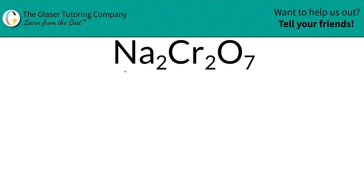So how do we find the percent composition of sodium, chromium, and oxygen in sodium dichromate? Well, the first thing we're going to do is find the total mass, and then we can find those percentages easy peasy. Watch how nice and neat this little table is to help us organize the information.